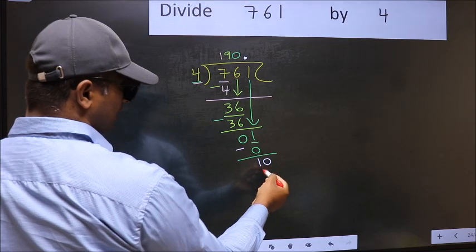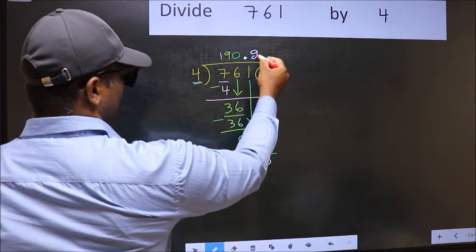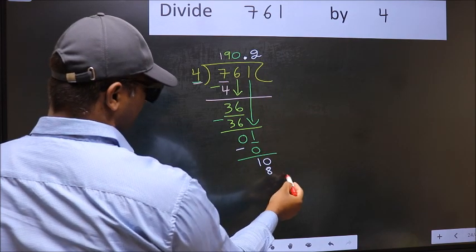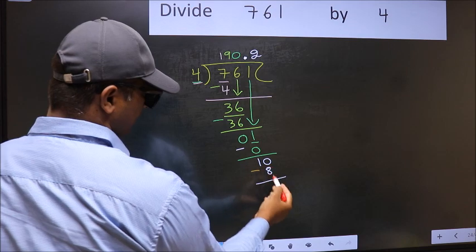So now you can put dot and take 0. So 10. A number close to 10 in 4 table is, 4 twos 8. Now you should subtract. 10 minus 8, 2.